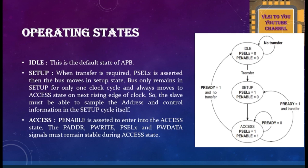Welcome back to one more session in the APB series. Today we are going to talk about operating states in APB. As I told you in the previous session, there are three main important things to consider: APB signals, operating states, and timing diagrams. Without understanding signals you can't go to operating states, and without knowing operating states you can't understand timing diagrams. Check out the APB introduction video and the APB signal description and master-slave communication videos first — I've linked those in the description box.